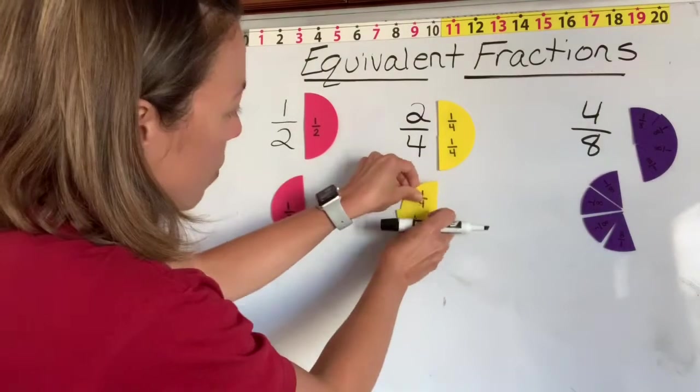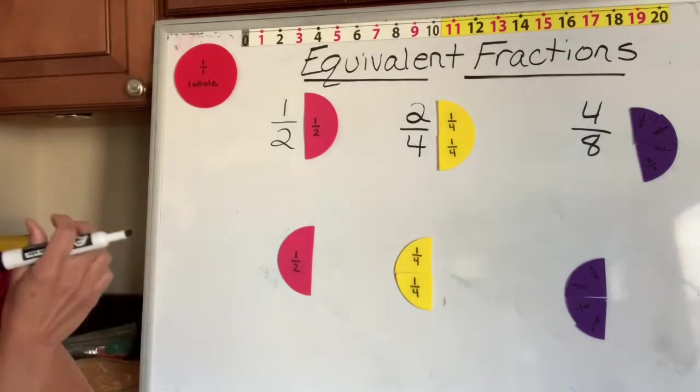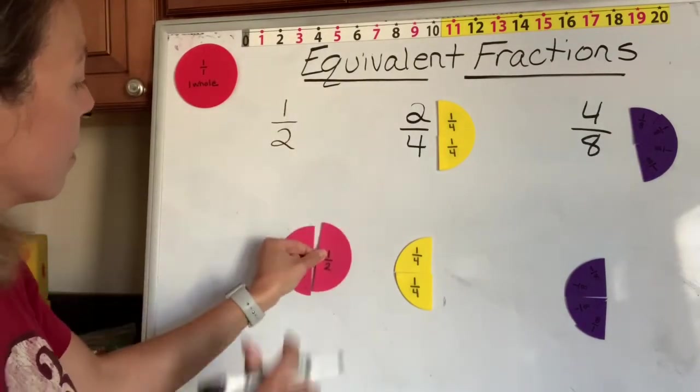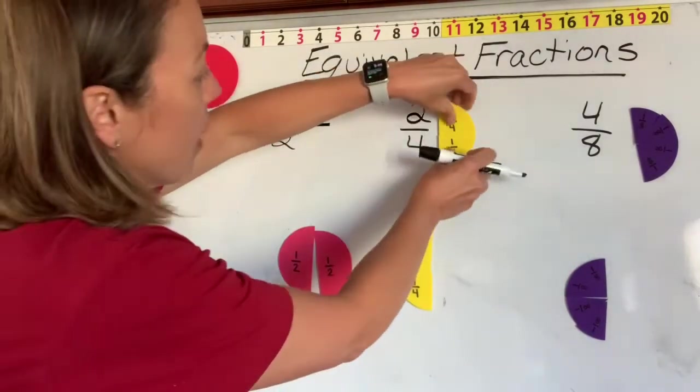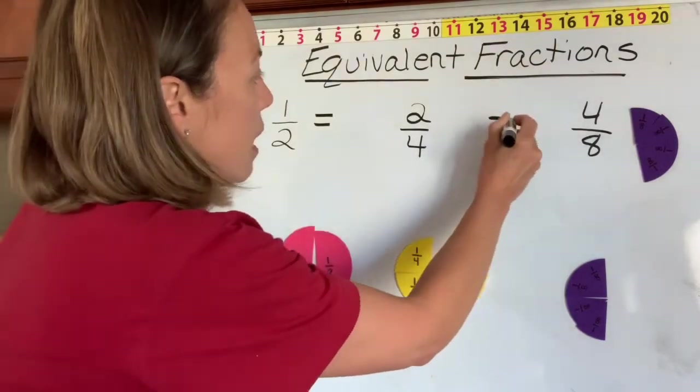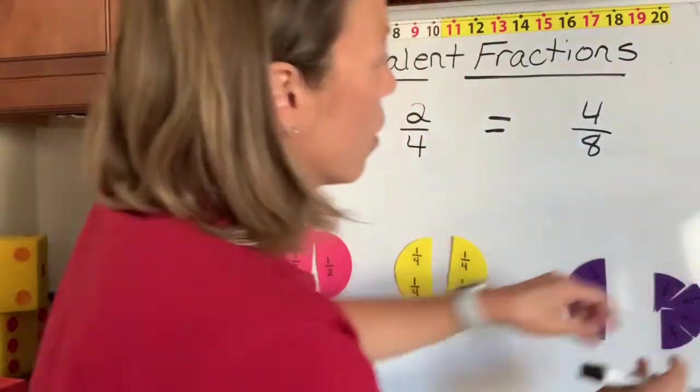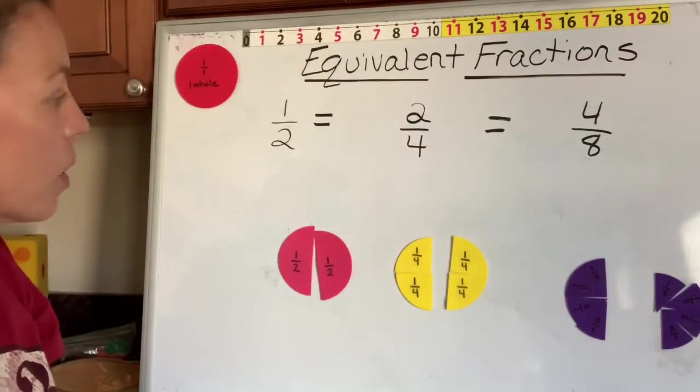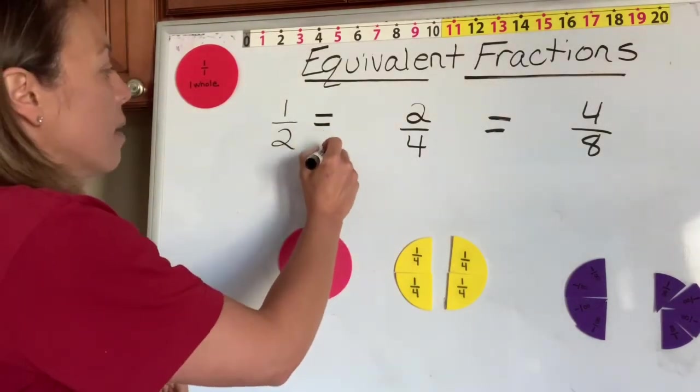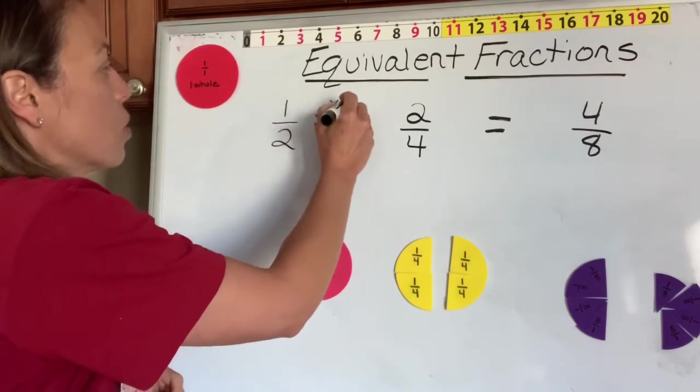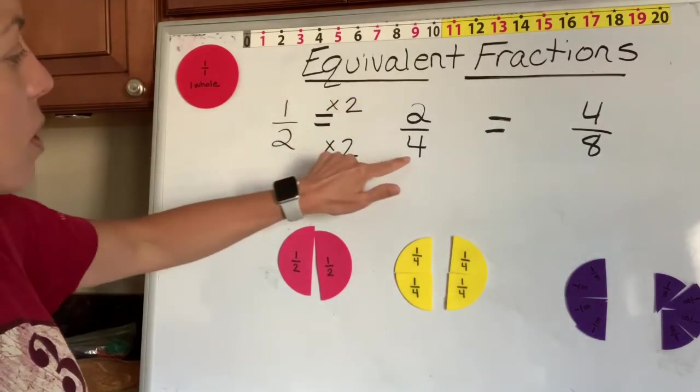So let's take a look at what all of this means. If we know that one half is equal to two fourths, and we know that two fourths is equal to four eighths, so mathematically, we need to look for a relationship here. So to go from two to four, you can multiply by two, and to go from one to two, you can multiply by two. One times two is two. Two times two is four.